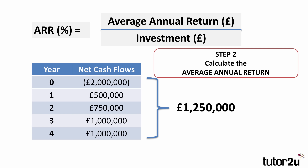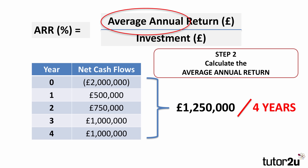The next step is to work out the average annual return, and this is relatively straightforward. We simply take the total return of £1,250,000 and divide that by the number of years of the project — four years — which means the average annual return, the top part of the formula, is £312,500 per year.